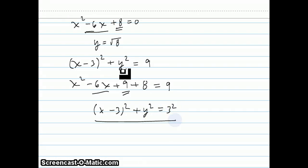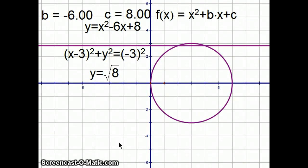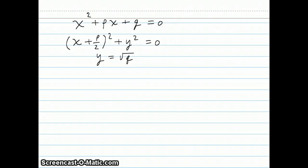That circle, together with this line, will solve our equation as was done over here. And in general, you could solve quadratic equations of the form x squared plus px plus q equals 0 by intersecting the horizontal line y equals square root of q with the circle x plus p over 2 squared plus y squared equals p over 2 squared.